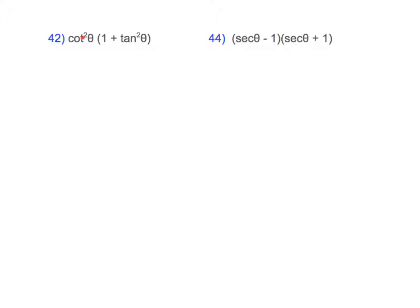In problem 42, I notice there is a cotangent and a 1 plus tangent squared. This gets a little tricky. What I have to notice is that 1 plus tangent squared is part of the Pythagorean identity — tangent squared plus 1 equals secant squared. So I can change all of this to secant squared, and then this other side here is cotangent, which I'll just drop down.